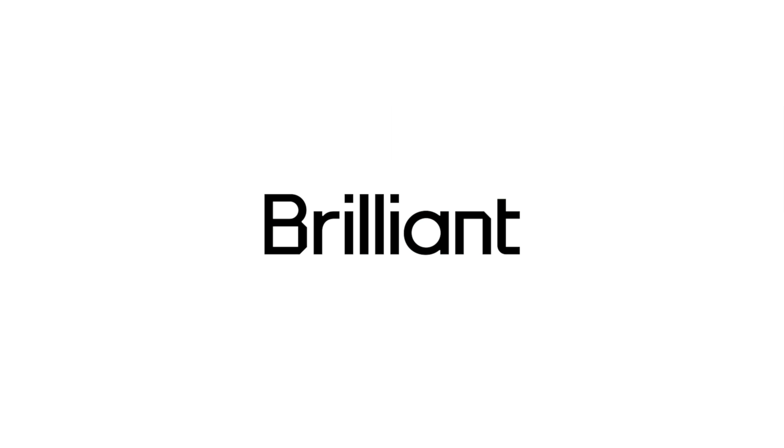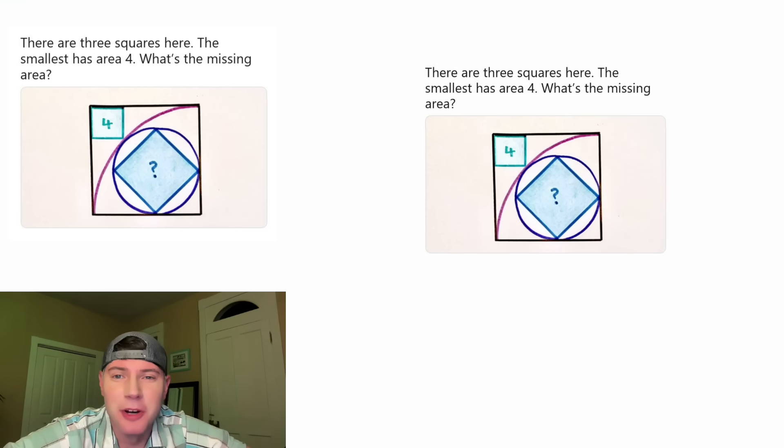This video is sponsored by Brilliant. Hey guys, this looks like a fun one. There are three squares here, this one with the four, this one with the question mark, and the large one that contains everything. What's the missing area?